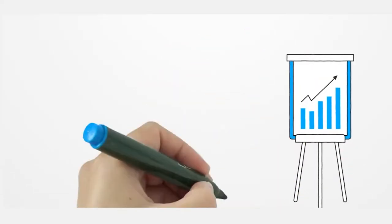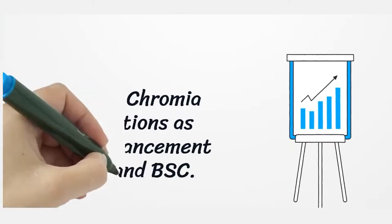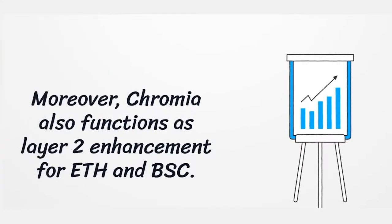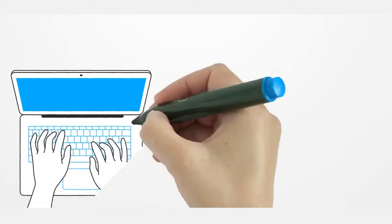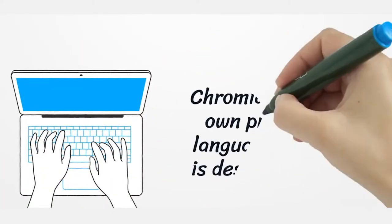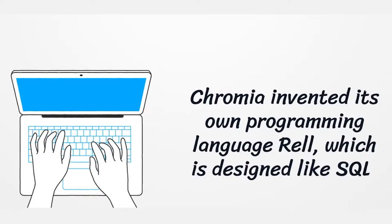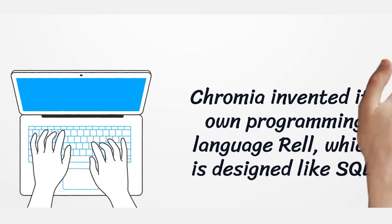Moreover, Chromia also functions as a layer 2 enhancement for Ethereum and Binance Smart Chain. Chromia invented its own programming language called RAL, which is designed like SQL and it's extremely easy to use.